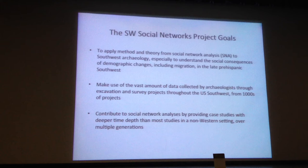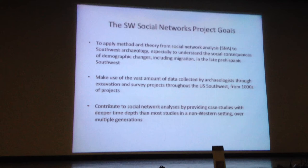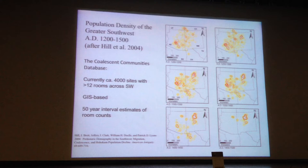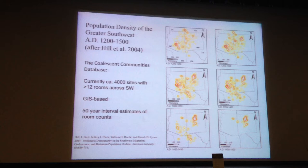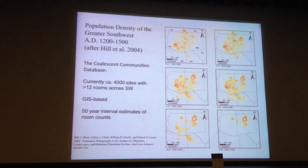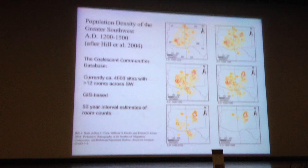One of the rare multi-generational social network analyses is Padgett's analysis of Venice mercantile families. Archaeology can contribute to social network analyses by providing much longer time depth to look at the ebb and flow of networks.